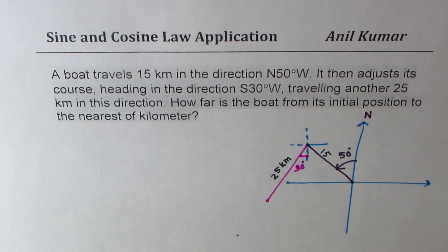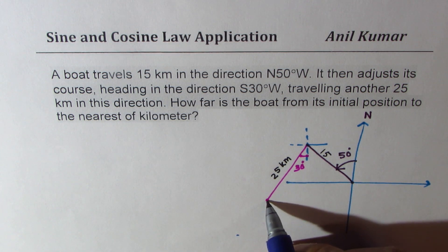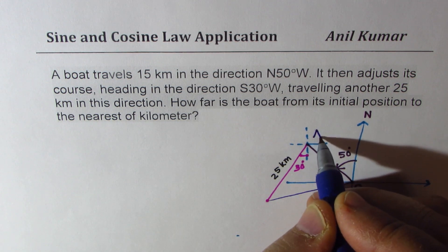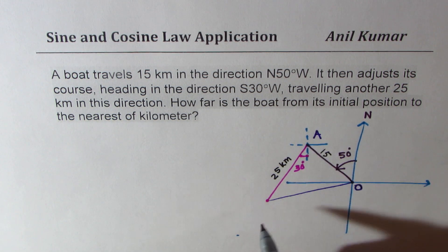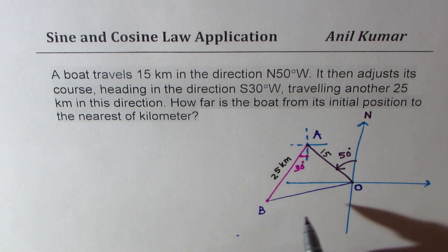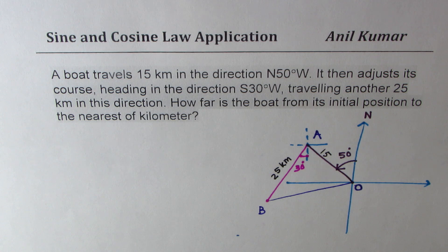How far is the boat from the initial point? The distance from the initial point is, let's join the points. Let's call initial point as O, first point A, and then B. So we need to find the distance OB. That is what we need to find, how far from initial point.